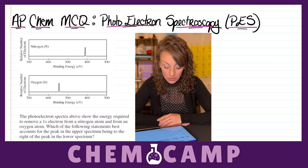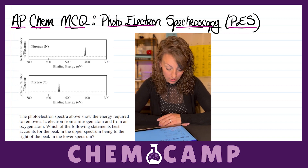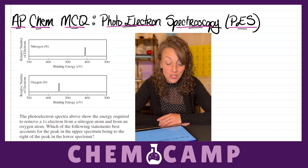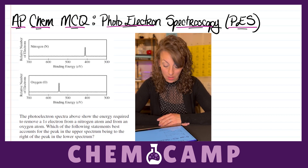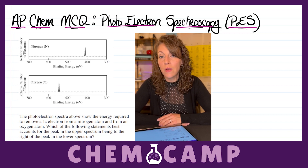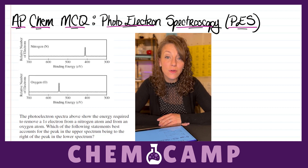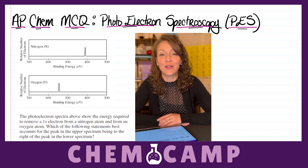The problem reads: the photoelectron spectra above show the energy required to remove a 1s electron from a nitrogen atom and from an oxygen atom. Which of the following statements best accounts for the peak in the upper spectrum being to the right of the peak in the lower spectrum?